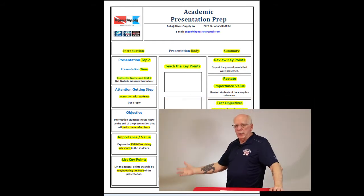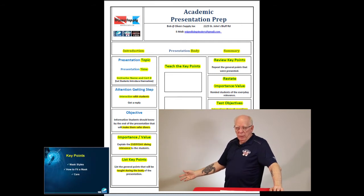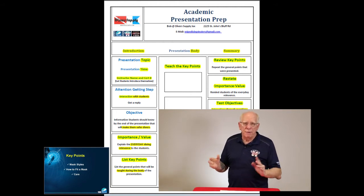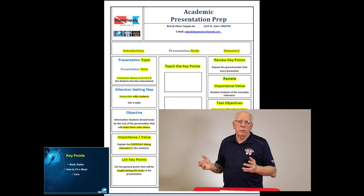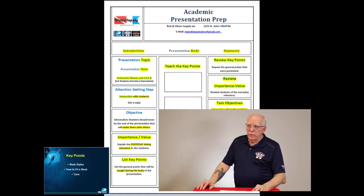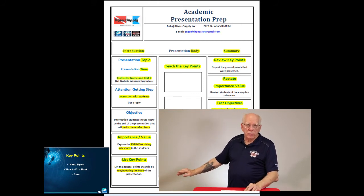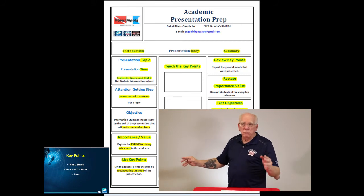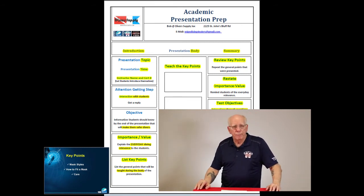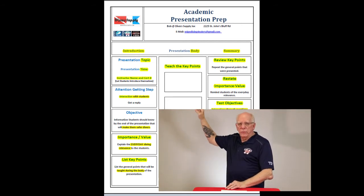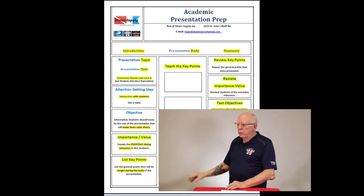Down here, we're going to list our key points. Now, a mask, information about a mask could be a very simple little five minute presentation. So if we pick three key points about a mask, we could say things like our first key point, our styles, mask styles. The next key point could be how to fit a mask. And then our last key point could be something simple, care and maintenance. So those are the slides that we're going to utilize to be our introduction area.